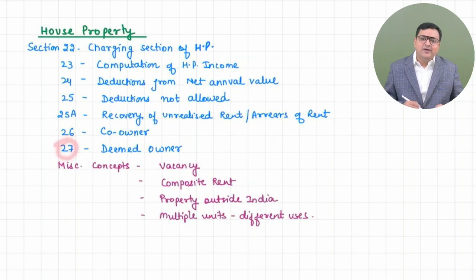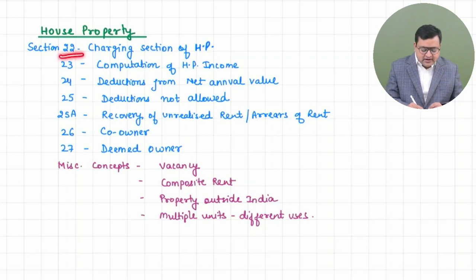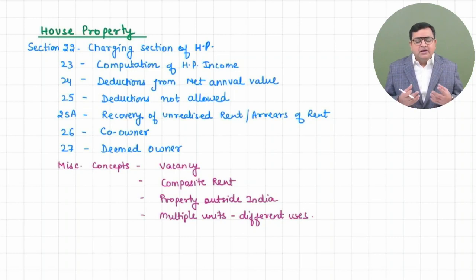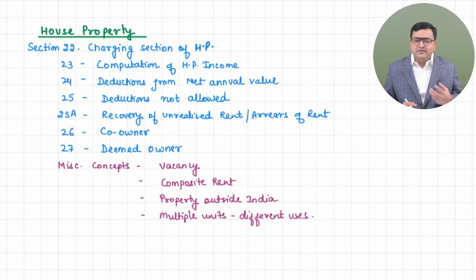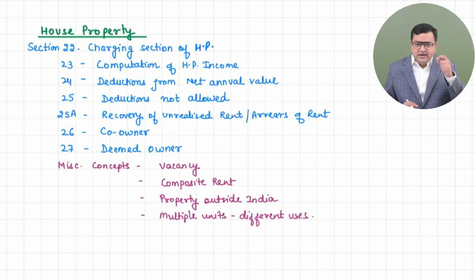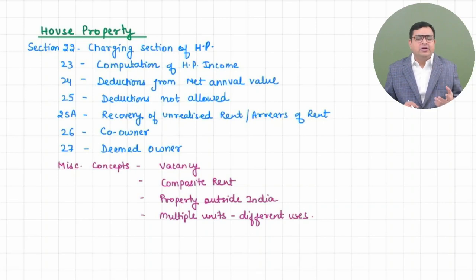The last section is Section 27, that is deemed ownership. Why is this concept there? Because our charging section 22 says that if there is a building and the assessee is the owner. But if the assessee is a deemed owner — because there are certain cases where the assessee is not the actual registered owner, but is supposed to be a deemed owner — those cases are covered under Section 27.